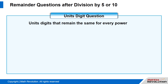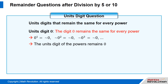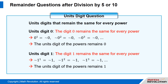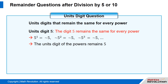We will look at the digits that remain the same for every power. Units digit 0: the digit 0 remains the same for every power — 0 to any power equals 0, and so on. Units digit 1: the digit 1 remains the same for every power — 1 to any power equals 1, and so on. Units digit 5: the digit 5 remains the same for every power — 5 to any power equals 5, and so on.